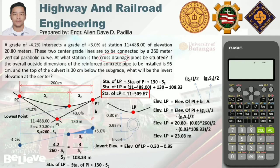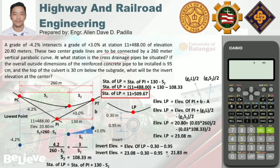What we are looking for is the invert elevation. Substituting into the equation: invert elevation equals 23.08 minus 0.3 minus 0.95, so the answer is 21.83 meters.